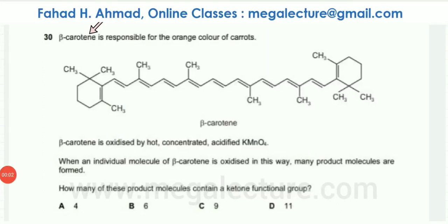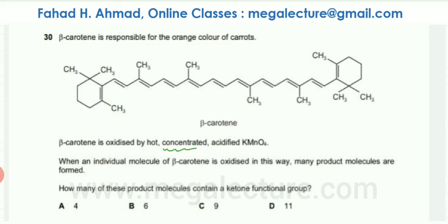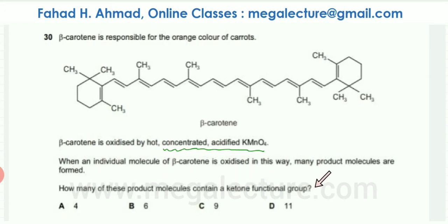The question states that beta carotene is responsible for the orange color of carrots, and that it can be oxidized by concentrated KMnO4. When an individual molecule of beta carotene is oxidized in this way, many product molecules are formed. We need to find how many of these product molecules contain a ketone functional group.